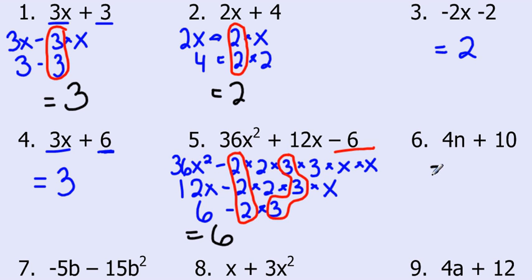Looking at the next one: we have an n here but not there, so I definitely can't take an n out. What's the highest number that goes into both 4 and 10? 4 goes into itself but it doesn't go into 10. 2 goes into 4 and 2 goes into 10. So the greatest common factor is 2.